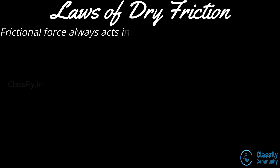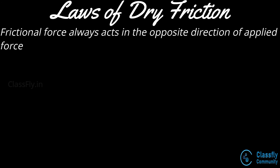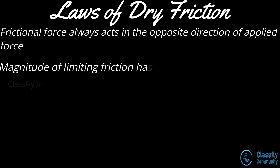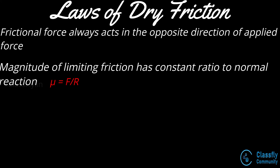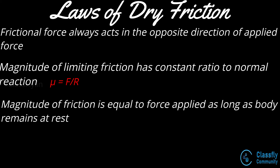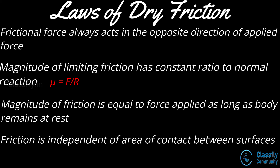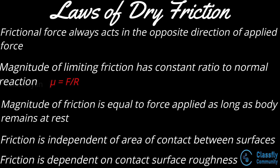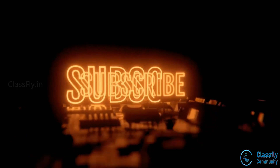Laws of dry friction: the force of friction always acts in the direction opposite to which the body tends to move. The magnitude of limiting friction bears a constant ratio to the normal reaction between the two surfaces, that is μ = F / R. The magnitude of the force of friction is exactly equal to the applied force when the body is at rest. The force of friction is independent of the area of contact between the two surfaces, and it depends upon the roughness of the surface in contact.